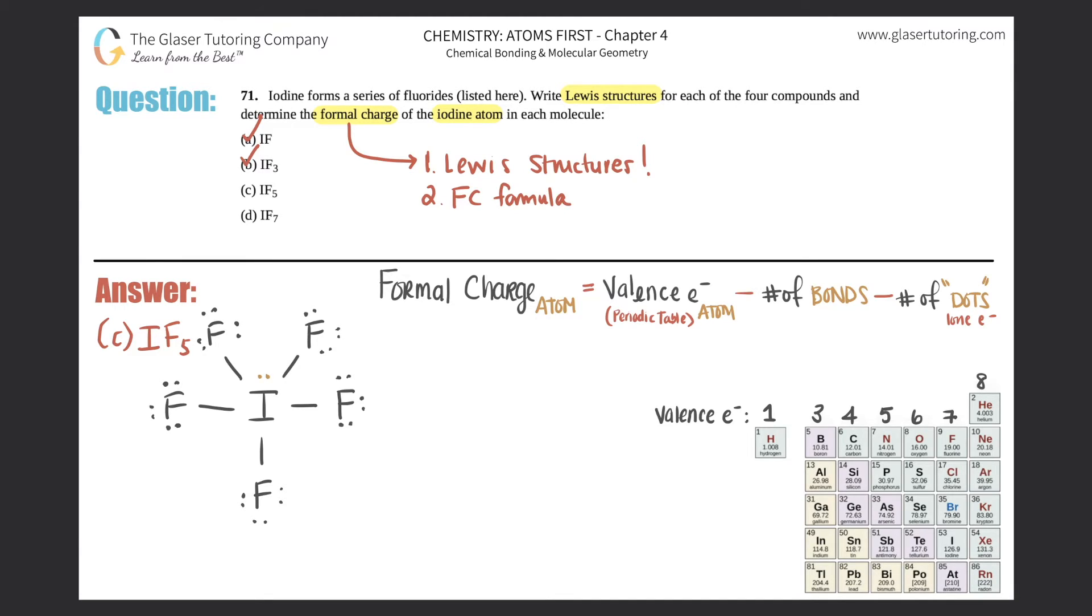And then iodine will have the expanded octet. It still has the seven valence electrons, so in this case it actually has just one lone pair - two electrons. So now let's look at this formal charge for this iodine. The valence electrons for iodine is still going to be seven because it's in group 17, minus the number of bonds: one, two, three, four, five. So that's minus five. Minus how many dots: one, two. So two lone electrons. Seven minus five minus two is zero - another neutral atom. So iodine in this case is neutral.